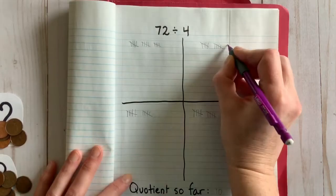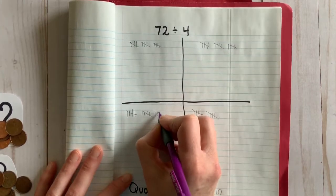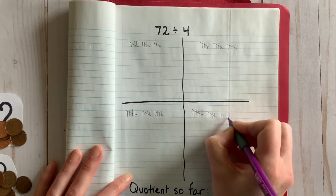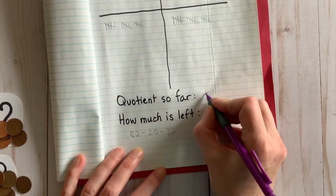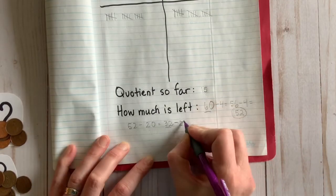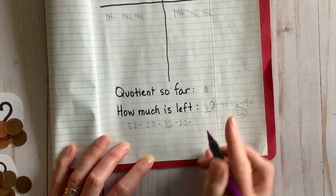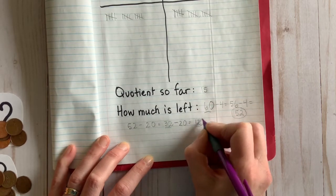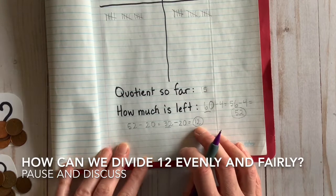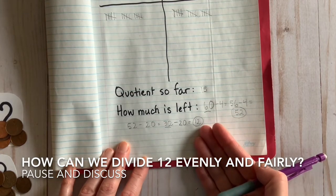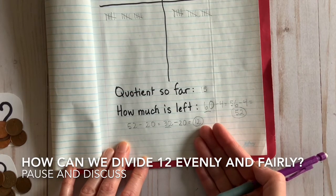I think I'm going to share out another five, and I just realized I probably could have shared out 10 at a time the first time—would have saved me time. Oh well, maybe next time. Oh, and look at that, we now have 12 left to divide. How can we split the last 12 evenly and fairly?